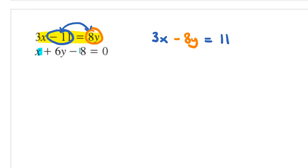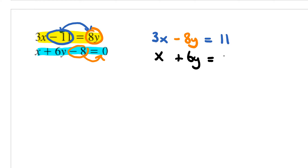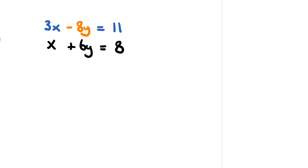So the x variable first, the y variable second, and then the constant on the right-hand side. And for my second equation, it's not written in the right form. But I can take this negative 8 and move it to the other side, and if I do that, I get x plus 6y. And that would equal 0 plus 8, which is going to be positive 8 on the right-hand side. That's similar to the previous problem — we have to make sure the x variables, the y variables, and the constants are all lined up vertically.